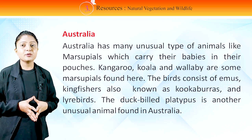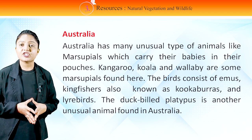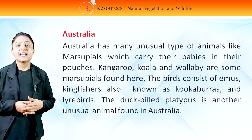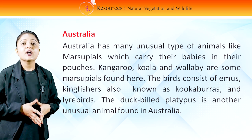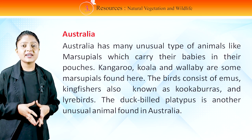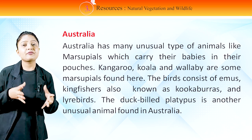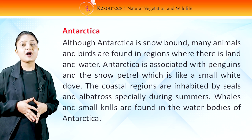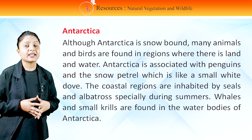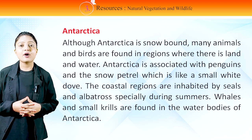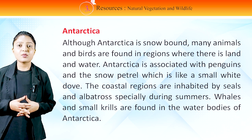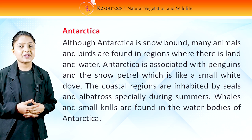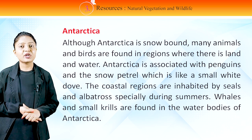Australia has many unusual types of animals like marsupials, which carry their babies in their pouches. Kangaroo, koala and wallaby are some marsupials found here. The birds consist of emus, kingfishers also known as kookaburras, and lyrebirds. The duck-billed platypus is another unusual animal found in Australia. Antarctica: Although Antarctica is snow-bound, many animals and birds are found in regions where there is land and water. Antarctica is associated with penguins and the snow petrel, which is like a small white dove. The coastal regions are inhabited by seals and albatross, especially during summers. Whales and small krill are found in the water bodies of Antarctica.